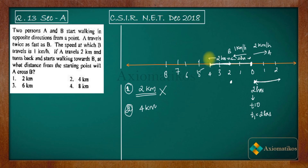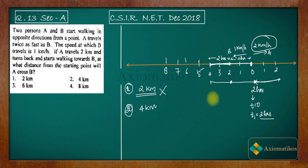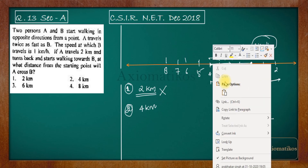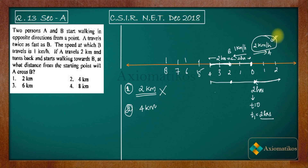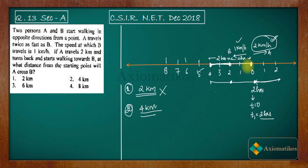At t equals two hours, A is back at the starting point. From there, A moves at two kilometers per hour toward B. In the next two hours, A covers four kilometers. Meanwhile, B moves at one kilometer per hour and covers two more kilometers — reaching the four-kilometer mark. So after four hours total, A is at the four-kilometer position and B is also at the four-kilometer position. Therefore, A crosses B at four kilometers from the starting point.